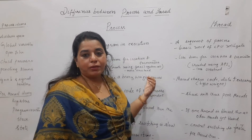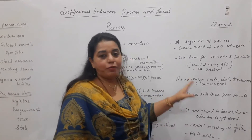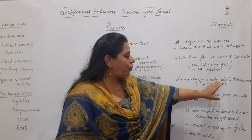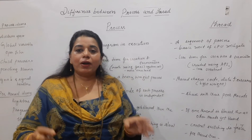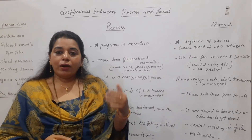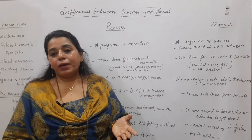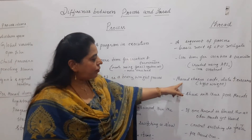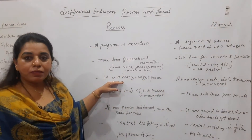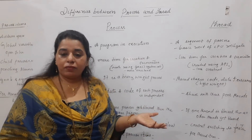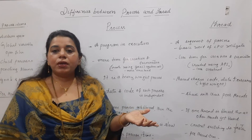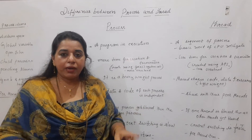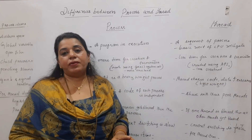We say a process is a heavyweight process whereas a thread is lightweight. The reason for using heavyweight and lightweight: a thread is lightweight because it shares code, data, and resources. What a thread owns is only the stack, the program counter, and the register set — all the code, data, and resources it shares. Whereas every process has its own code part, data part, and the files it uses for execution, apart from the stack, registers, and state of the process — all these items are needed for a process.